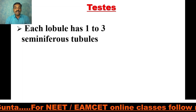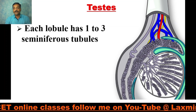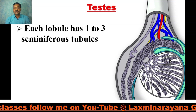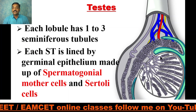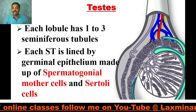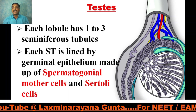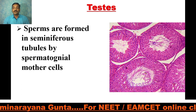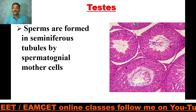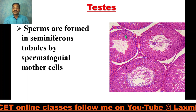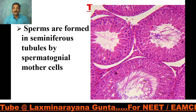Each lobule has 1 to 3 seminiferous tubules in it. Each seminiferous tubule is lined by germinal epithelium, which is made up of spermatogonial mother cells. The walls of the seminiferous tubules have spermatogonial mother cells as well as Sertoli cells. The spermatogonial mother cells produce sperms, and the Sertoli cells nourish the sperm cells.